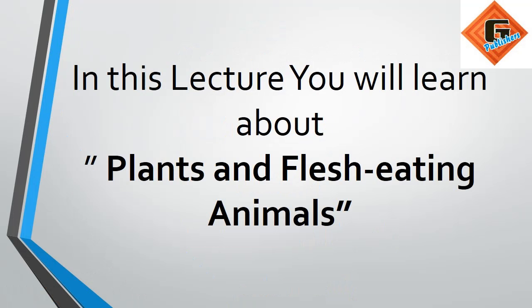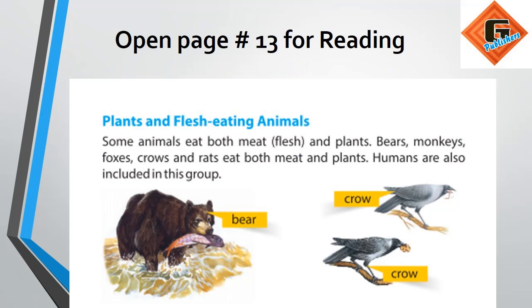Let's start reading: Plants and Flesh-eating Animals. Some animals eat both meat and plants. Bears, monkeys, foxes, crows and rats eat both meat and plants.